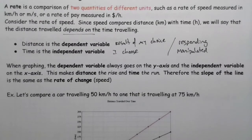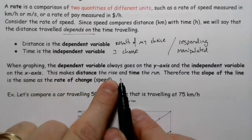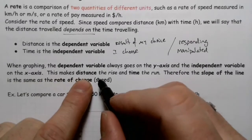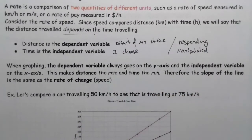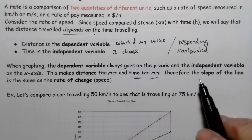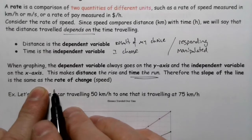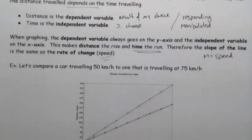Distance is dependent, time is independent. Independent means I choose, and this one here is the result of my choice. The independent variable is the manipulated one, and the dependent is the responding. When graphing, the dependent variable always goes on the y-axis. The independent variable goes on the x-axis. That makes distance the rise and time the run. Therefore, the slope of the line becomes the same as the rate of change or the speed.